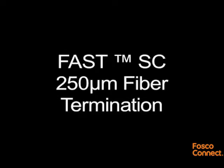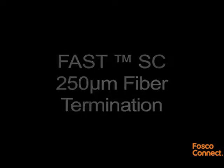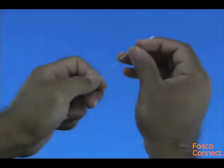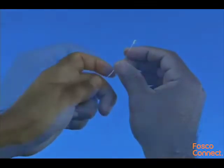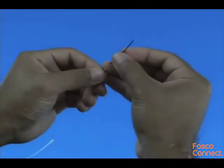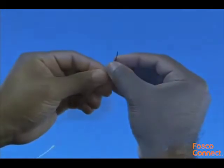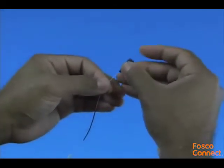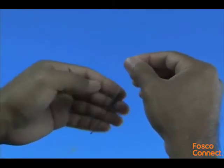250 micron fiber termination: Slide the clear protective tube, 250 micron protective tube, and the 900 micron boot, in order, onto the fiber to be terminated.